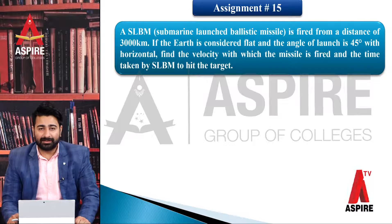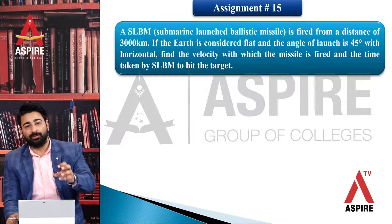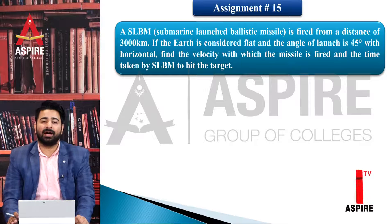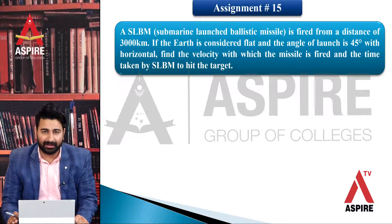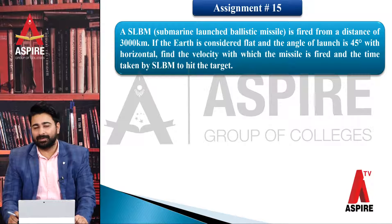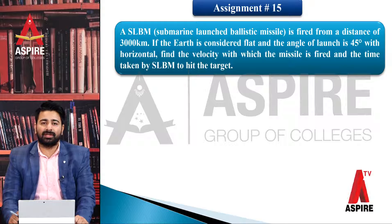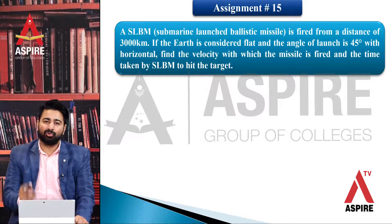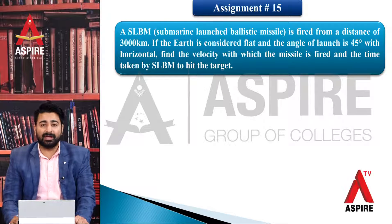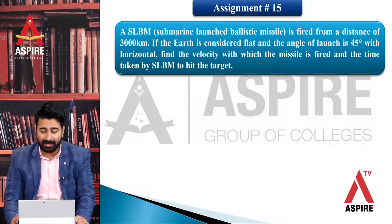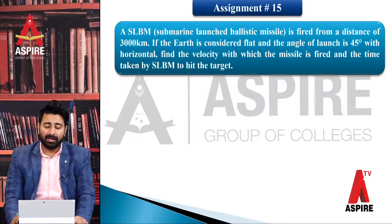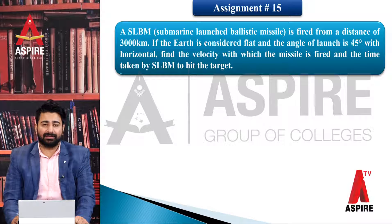آئیے students، اس کے بعد last assignment کی طرف چلتے ہیں۔ یہ assignment آپ کی textbook کا 15واں numerical ہے (3.15)۔ یہ ballistic missile اور rocket propulsion کے topic سے متعلق ہے۔ Question یہ ہے: ایک ballistic missile کی range 3000 kilometer ہے اور اسے 45 degree پر launch کیا جائے — تو اس کی initial velocity کیا ہوگی اور time of flight کیا ہوگا؟